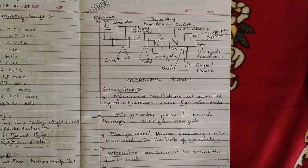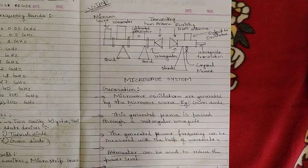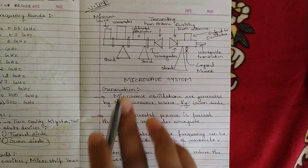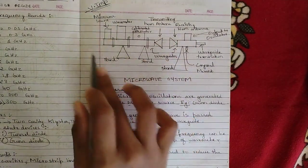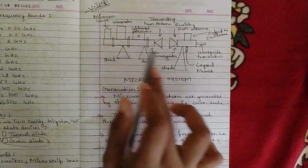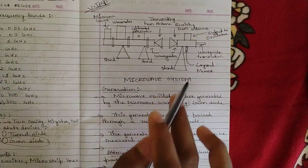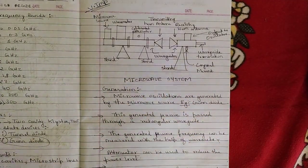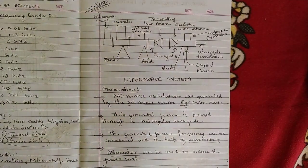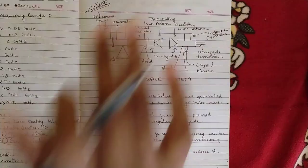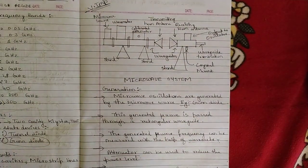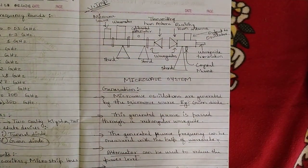The microwave system diagram is very important. Please draw it neatly using a scale, as it is a fixed exam question. Each component plays a very important role and should be clearly marked. Include generation, reception, and construction points to score full marks.